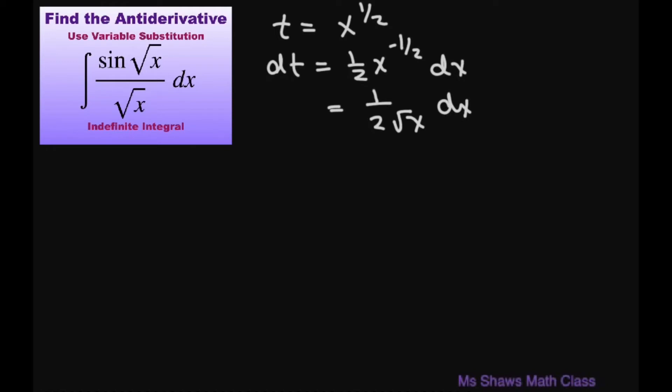Now we're going to want to use substitution, but we don't have a two here. So I'm going to cross multiply and let two dt equal one divided by square root of x dx.